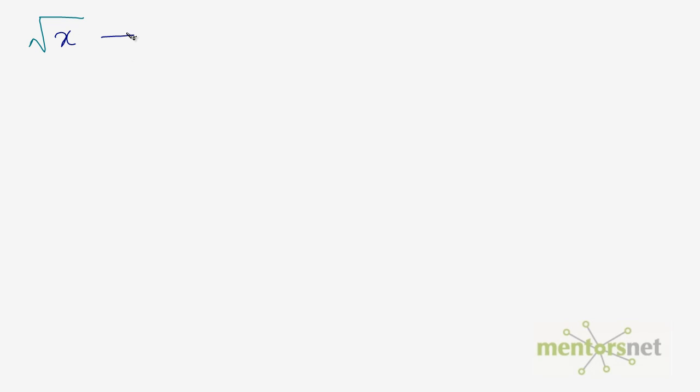Hey everyone, in this video we will be looking at square roots and some of their properties. A square root is denoted by this symbol right there. Let's say we want to calculate the square root of a number denoted by x, and the square root of this number x yields us another number y.